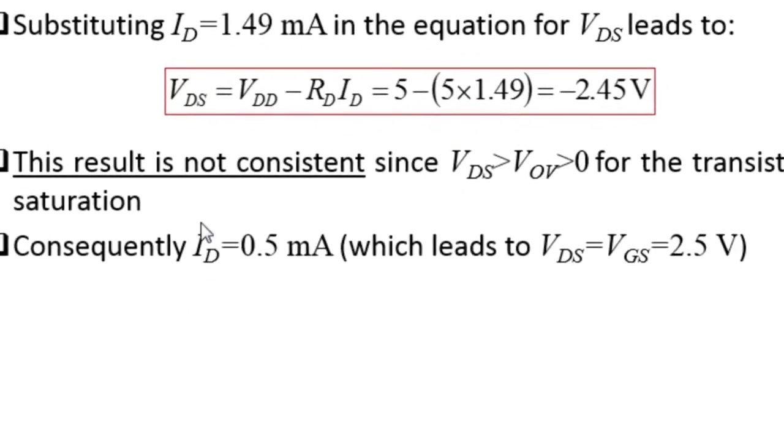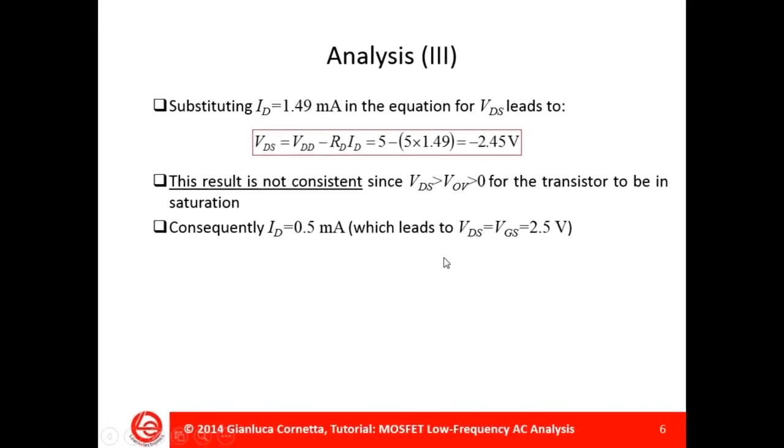Consequently, ID equal to 0.5 milliamps is the correct solution. And this leads to VDS equal to VGS equal to 2.5 volts.